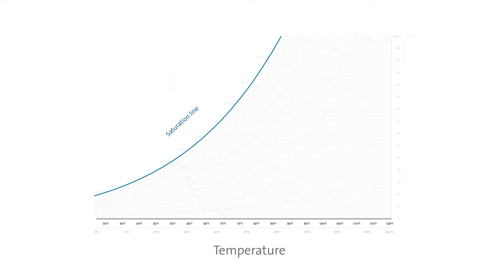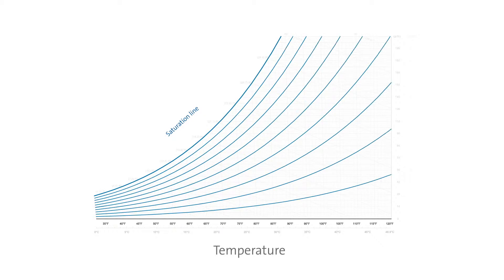In technical systems such as an air conditioning system, it is very important to know how close the humidity contained in air is from the saturation line — in other words, from what point onwards condensation will occur. The amount of water which air can absorb is therefore scaled from 0 to 100% and is known as relative humidity. Relative humidity is a percentile proportion describing the degree to which air is saturated and how close the air condition is to the saturation line.